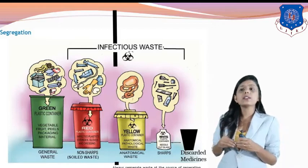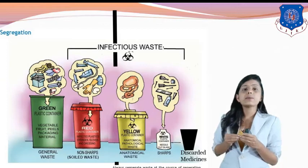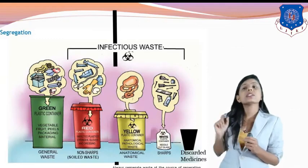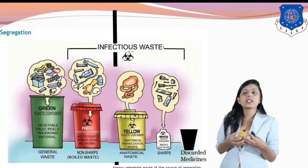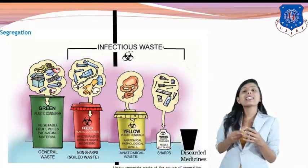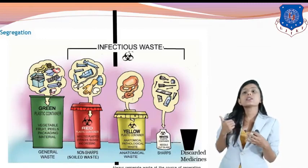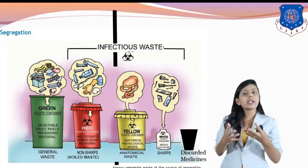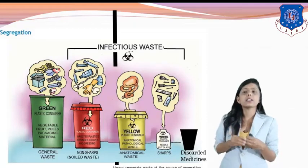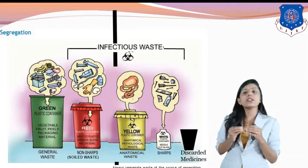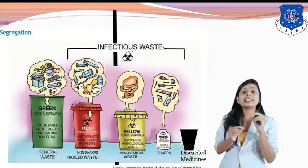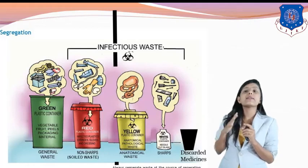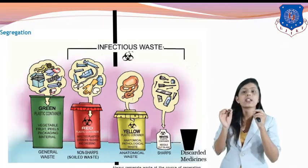The red color dustbin is for non-sharp soiled waste — waste which is infectious but cannot cause puncture or cut, such as syringes (plastic), gloves, cotton, dressing pads, and bottles. The yellow color dustbin consists of human organs or animal organs that are infectious. The white color dustbin is specifically used for sharp waste — infectious sharp waste such as needles, syringes, blades, and scalpels are collected in the white color dustbin because they can cause punctures and cuts.